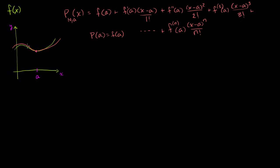This is all review. I have this polynomial that's approximating this function. The more terms I have, the higher degree of this polynomial, the better it will fit this curve, the further I get away from a. But what I want to do in this video is think about whether we can bound how well it's fitting this function as we move away from a.